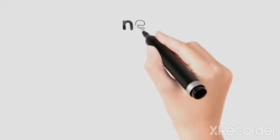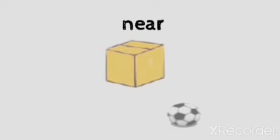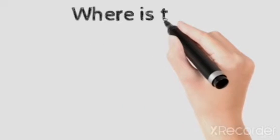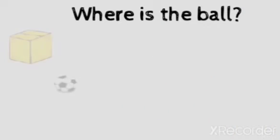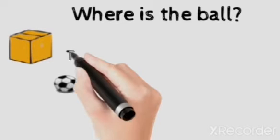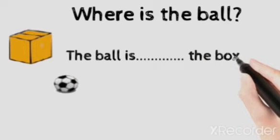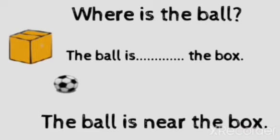Third preposition: 'near'. There is a ball closer to the box. Then where is the ball? The ball is near the box.